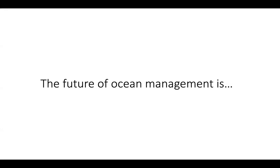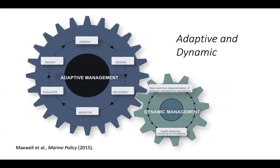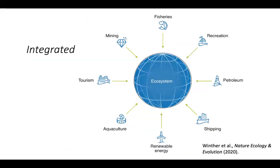Looking through recent literature, policy discussions, and conferences, there are many buzzwords about the future of ocean management. Adaptive and dynamic management is extremely important and hinges on the use of near real-time data to actively change management regimes in response to changing conditions in a dynamic ocean ecosystem. We also talk a lot about integrated ocean management, where we're not just looking at one single sector at a time, but bringing together many different uses and ecosystems to understand how the ocean can be better managed with that integrated lens.